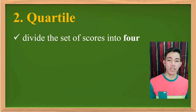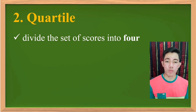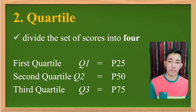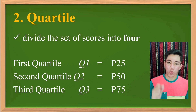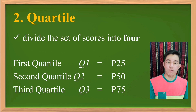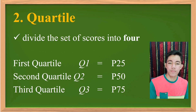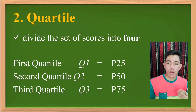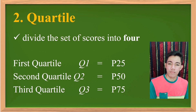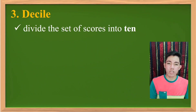Now let's proceed to quartile. When we say quartile, you divide it by four — meaning you divide the set of scores into four parts. We have the first quartile, second quartile, and third quartile. The first quartile is equivalent to the 25th percentile, the second quartile is equivalent to the 50th percentile, and the third quartile is equivalent to the 75th percentile.